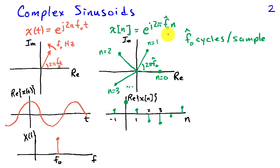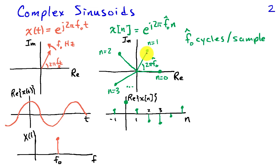If we look at a discrete time complex sinusoid, e to the j 2 pi f0-hat n, where f0-hat is our discrete time frequency, or digital frequency, measured in cycles per sample. I can visualize this complex sinusoid in the complex plane as a sequence of samples separated by 2 pi times f0-hat radians. Each sample makes an f0-hat cycle step. Between sample n=0 and n=1, we're taking about 1/6 of a cycle, and then the same distance between each subsequent sample. This corresponds to samples of a cosine on the real axis.